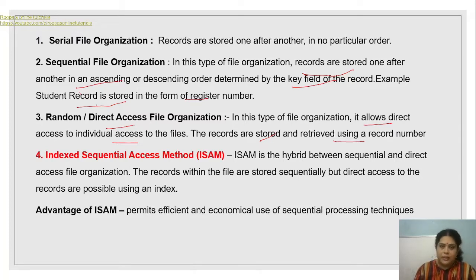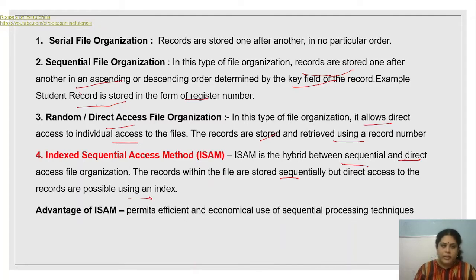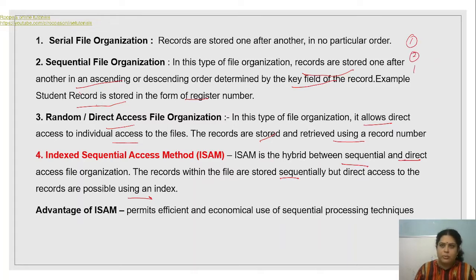ISAM is a combination between sequential and direct access methods. Records within the file are stored sequentially, but direct access to a record is possible using an index. For example, with register numbers for 10 students, records are arranged from 1 to 10, one after another.